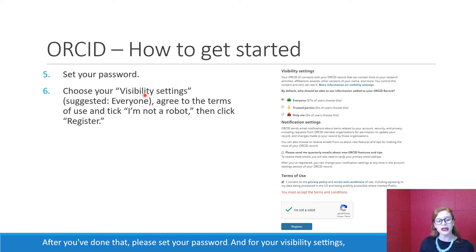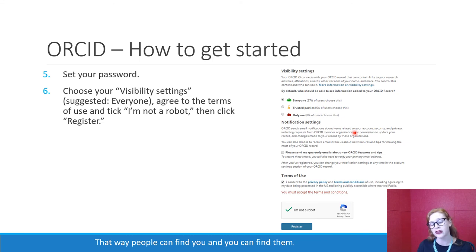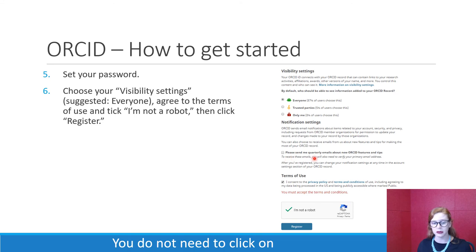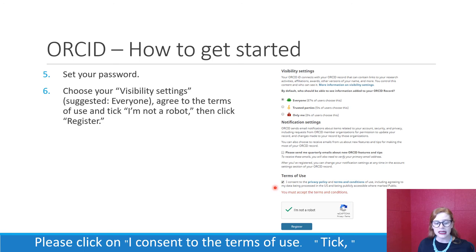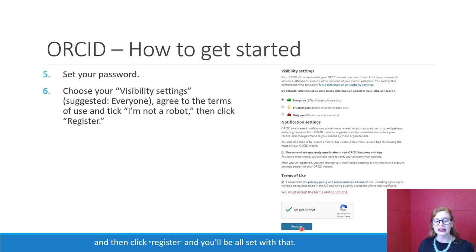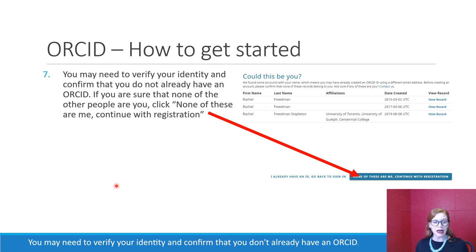For your visibility settings, please click on Everyone. We suggest this to make your profile as visible as possible so people can find you and you can find them. You do not need to click on 'Please send me quarterly emails about features and tips' — that's up to you. Please click on 'I consent to the terms of use,' tick 'I'm not a robot,' and then click Register. You'll be all set.